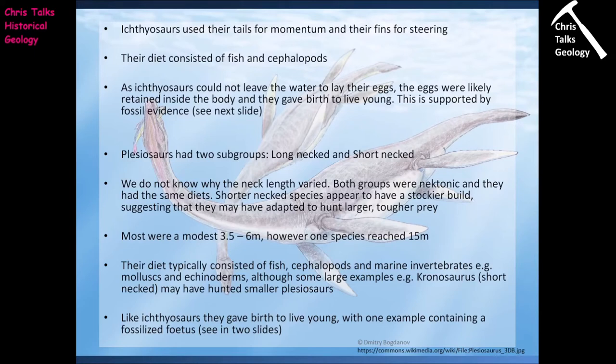The next group we're interested in are the plesiosaurs. Plesiosaurs have two subgroups: the long-necked plesiosaurs and the short-necked plesiosaurs. We don't know why the neck length varied between these two groups. Both groups were nectonic — swimming around in open water — with no different habitat involved, and they both had very similar diets. The long-necked and short-necked plesiosaurs would be eating approximately the same thing.